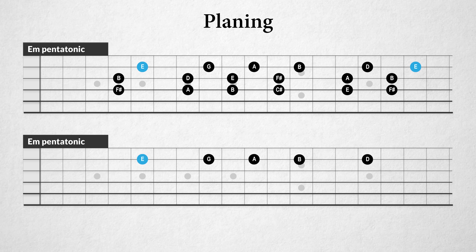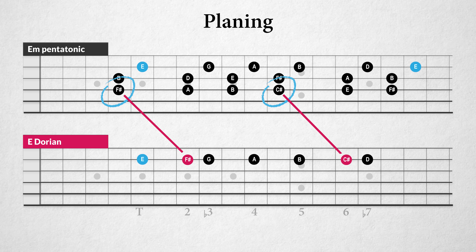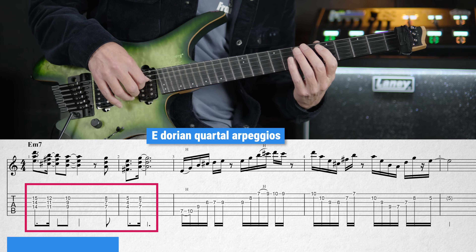If we look again, we'll notice that we have gained two extra notes by planing: namely the major second and major sixth. That looks suspiciously like the Dorian mode with that major sixth in a minor scale. So now we have created an ambiguous quartal chord within the ambiguous Dorian mode. In the next example, I use these quartal chords just as chords — like a texture — and as arpeggios.